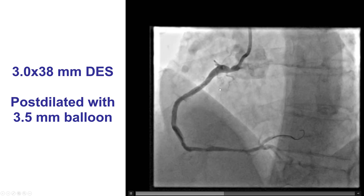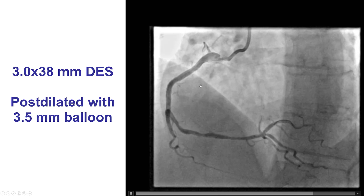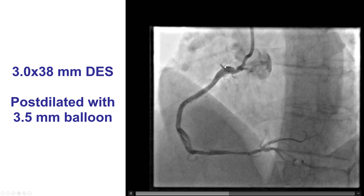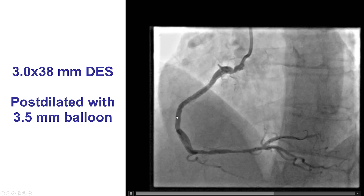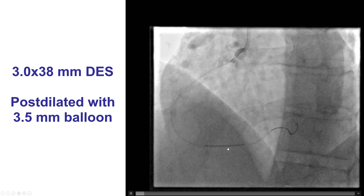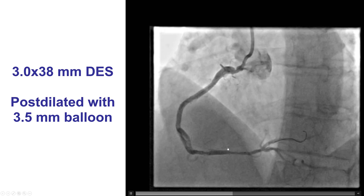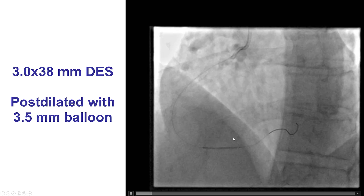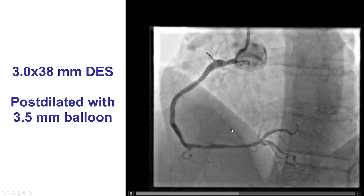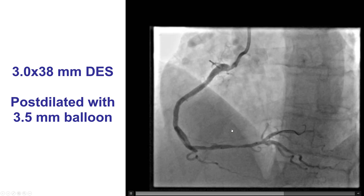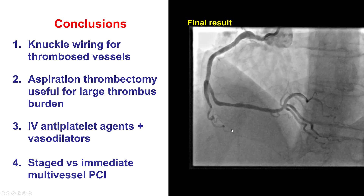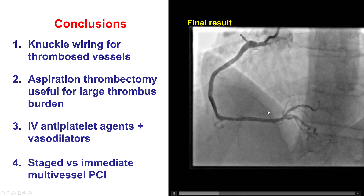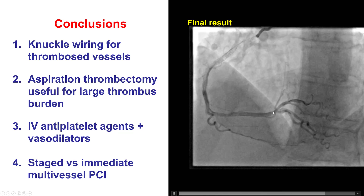In this patient, we placed a 3x38 mm DES that was post-dilated with a 3.5 mm balloon, giving a nice result. However, there remained a significant lesion distally despite giving adenosine and nitroglycerin. That was covered with another 2.75x20 mm drug-eluting stent, providing a nice result with TIMI-3 flow into the right coronary artery.